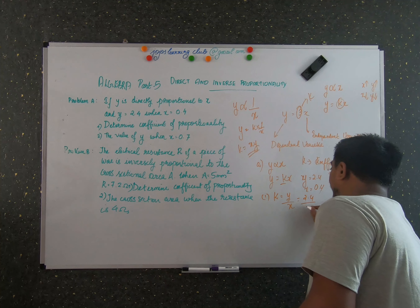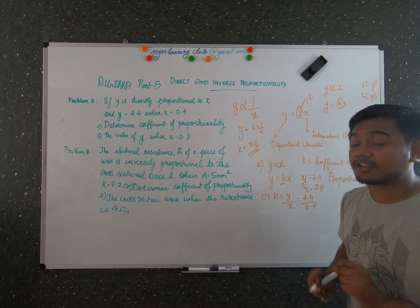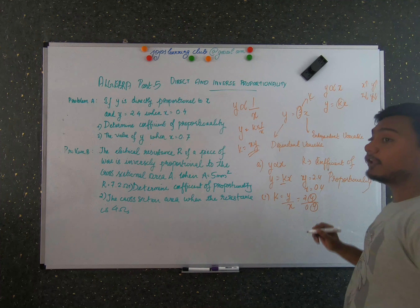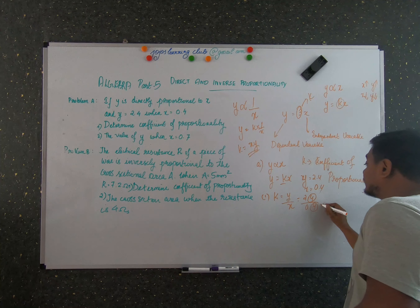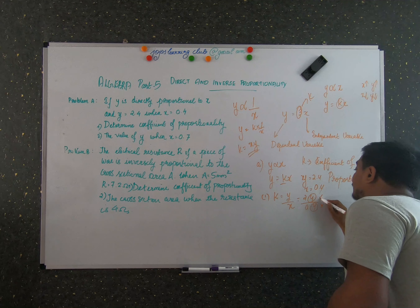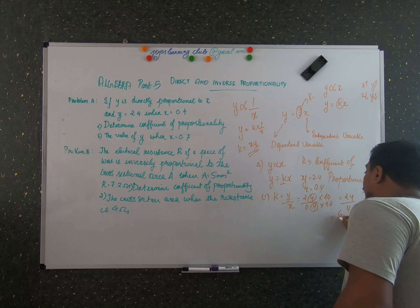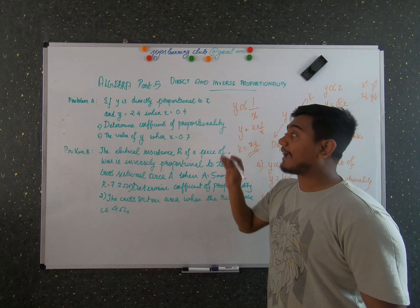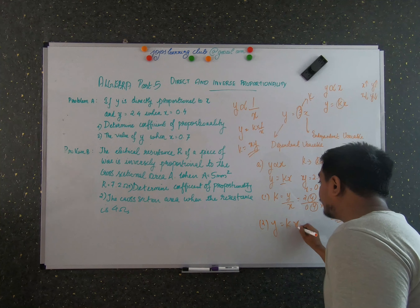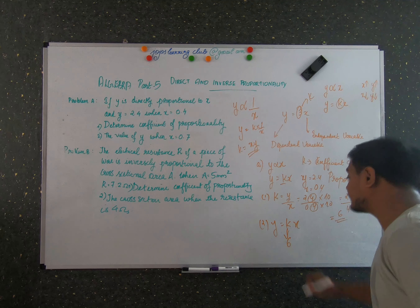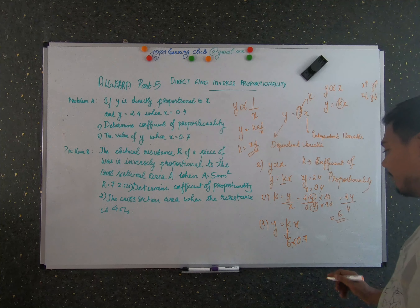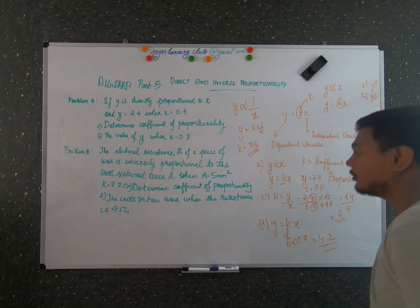So k is 2.4 divided by 0.4. When you have decimals in a fraction, multiply both numerator and denominator by 10 to remove the decimal points. So that gives us 24 by 4, and the value of k is 6. Now, we need to find the value of y when x is equal to 0.7. Using the formula y is equal to kx, the coefficient of proportionality is 6 and x is 0.7, so y is equal to 6 into 0.7, which is 4.2. Very easy!